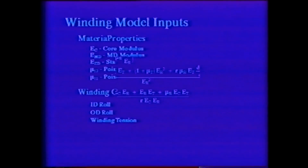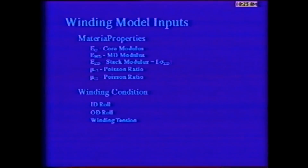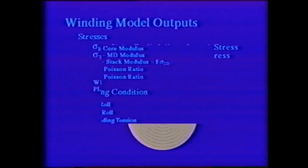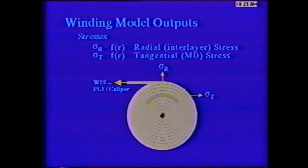To run a winding model, one needs to know both material property and winding condition inputs. Material properties include the modulus or stiffness in the machine direction and in the z-direction as a stack. Winding condition inputs include the inner and outer roll diameter as well as winding tension. The outputs of conventional winding models include radial and tangential stresses at any radius. Radial stresses are the inner layer pressure acting in the z-direction of the web; tangential stresses are the tension or compression acting in the machine direction of the web.